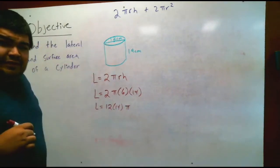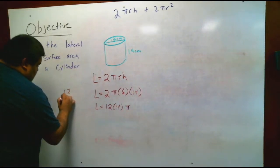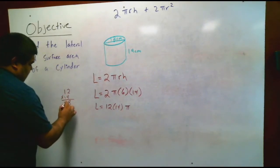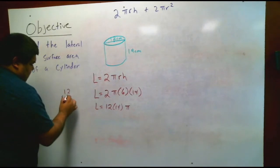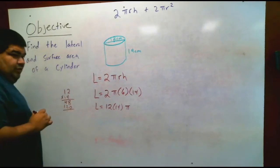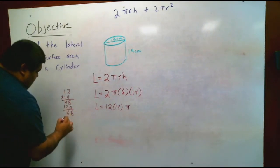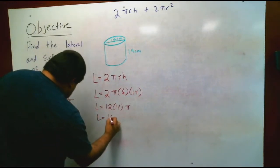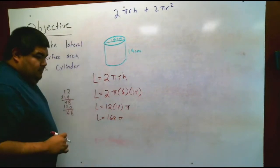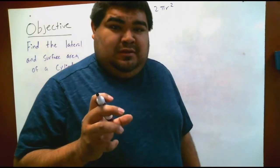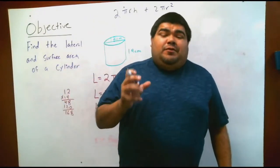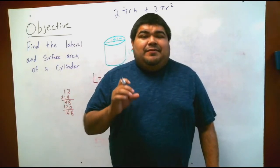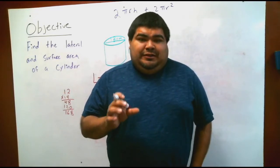Let's work out 12 times 14: 4 times 2 is 8, 4 times 1 is 4, then 1 times 2 is 2, 1 times 1 is 1 — adding it all up gives us 168. So lateral area equals 168 pi. Remember we're finding area, so we need to convert that — if your calculator doesn't have the pi symbol, you can use 3.14.